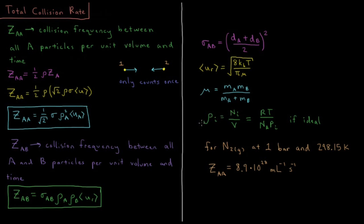For each of these particles, their number density is the number of particles of that species divided by the volume, which for an ideal gas is equal to the gas constant times temperature divided by Avogadro's number times the pressure of that individual gas.